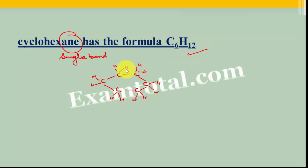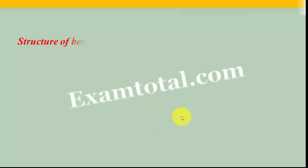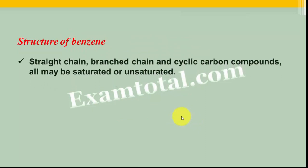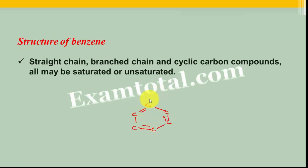So far all examples have been of single bonds — saturated compounds. Now if we take an unsaturated example, we look at benzene. We've seen straight chain, branched chain, and cyclic compounds — they can all be saturated or unsaturated. Benzene has six carbon atoms joined in a ring with alternating double bonds. With this carbon there are already three bonds — one hydrogen is attached to each carbon. So the formula is C6H6. This is the formula of benzene.